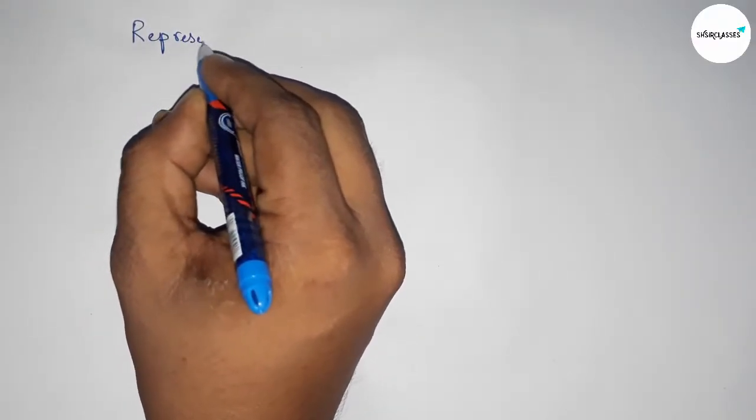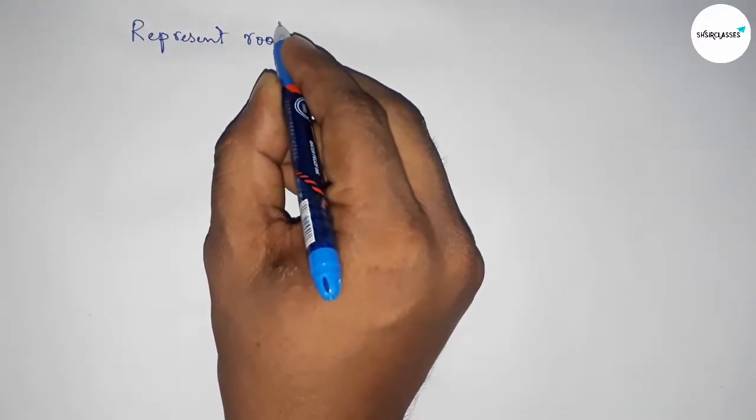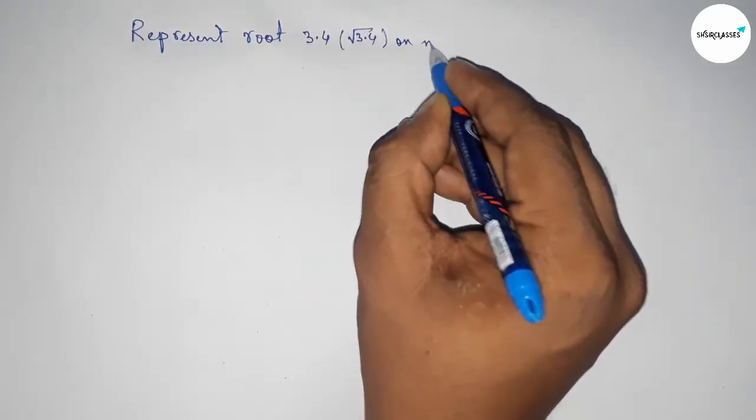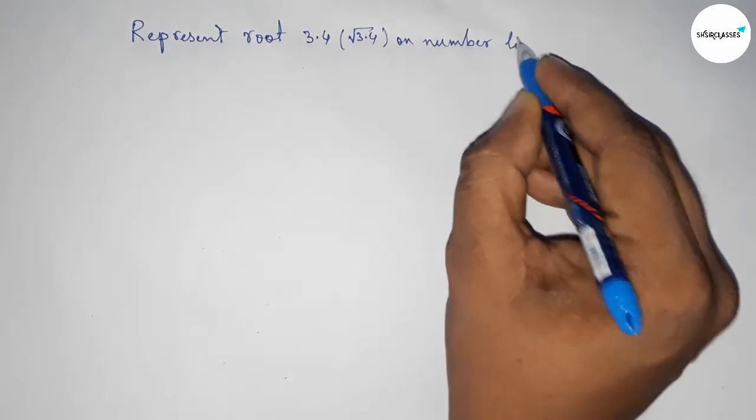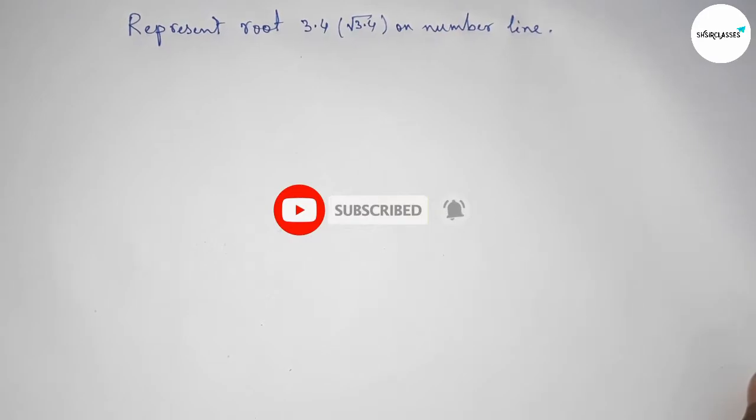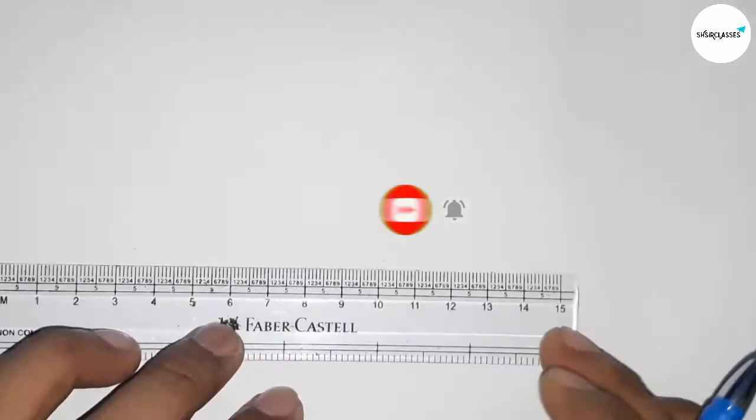Hi everyone, welcome to Accessory Classes. Today we're talking about the representation of root 3.4 on the number line. Before starting the video, please subscribe to the channel and press the bell icon.